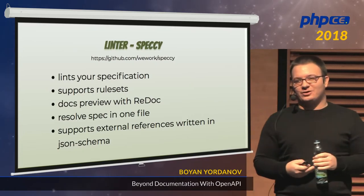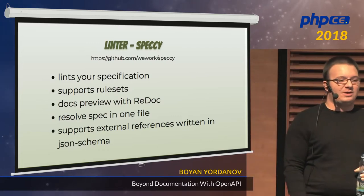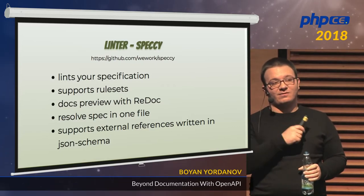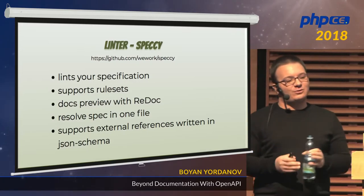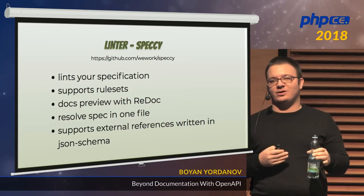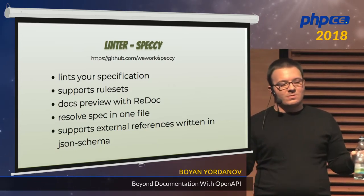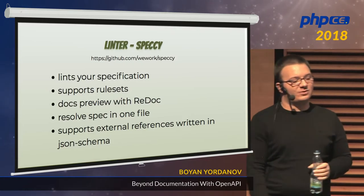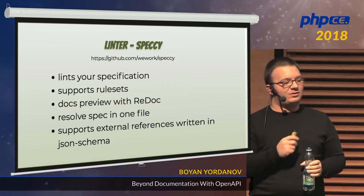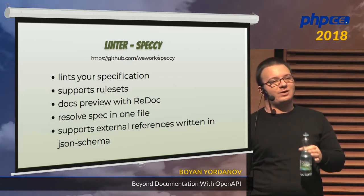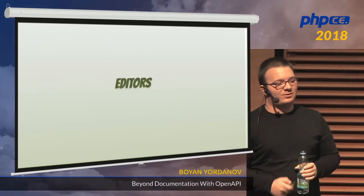To actually write a specification that is valid — because it's very easy to write YAML that's not valid and misspell some things — the best linter I've tried is called Speccy, developed by WeWork, and again Phil Sturgeon is the main author. It can lint a specification, it supports rule sets, so if you have some special rules defined for your company you have a way to define those — maybe your description shouldn't be longer than 300 words, or you require having tags everywhere. It ships with a base of default rules that are good enough to start, it supports preview with Redoc, and if you want to write JSON Schema today this is your only option to include it in your OpenAPI spec later.